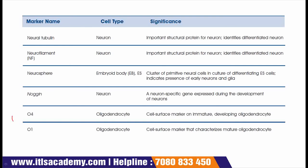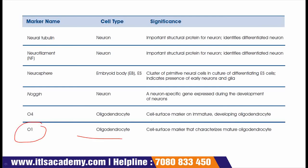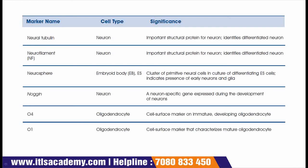The next markers are O4 and O1. Both are present on oligodendrocytes. The significance of O4 is that it is a cell surface marker on immature developing oligodendrocytes. The significance of O1 is that it is a cell surface marker that characterizes mature oligodendrocytes. There is a very minute but important difference: O4 helps in developing oligodendrocytes, representing the early stage, while O1 characterizes mature oligodendrocytes, representing the later stage.